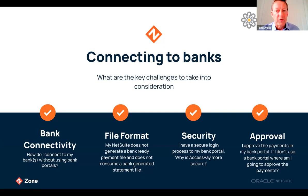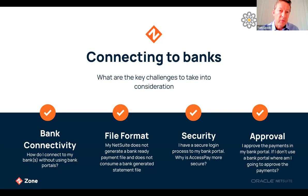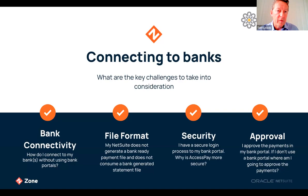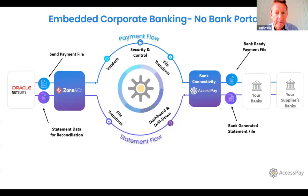Finally, the issue of approvals. Many customers say their approvals happen in their bank portals and wonder where to add the approval process if not there. AccessPay has a simple solution: the approval process happens in AccessPay before the file is released to the bank. It's straightforward — literally a click — and the whole process is recorded for audit purposes. Automation is more than just replacing bank portals; customers are taking it to the next level, driving finance transformation.